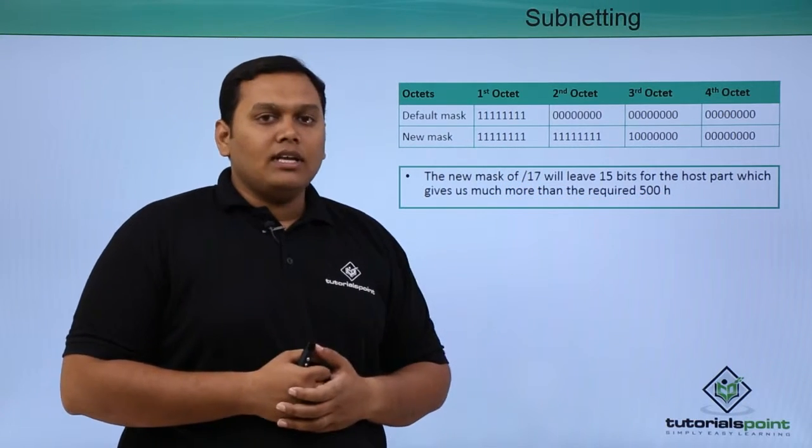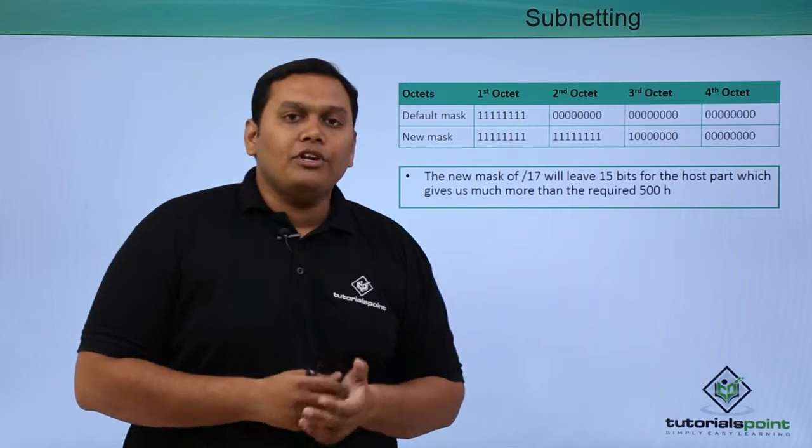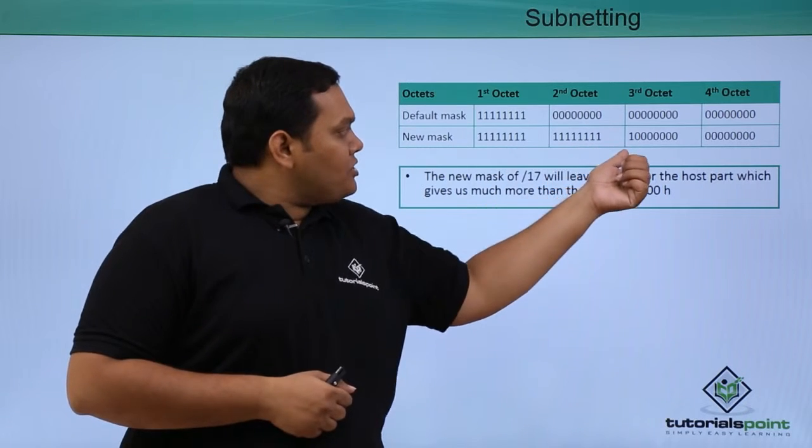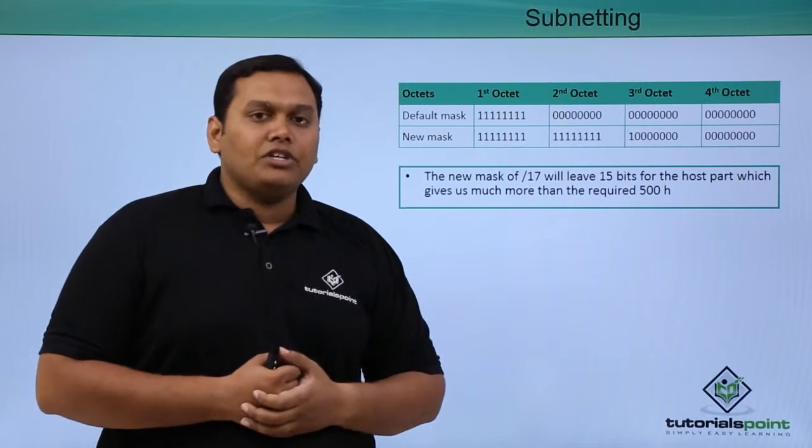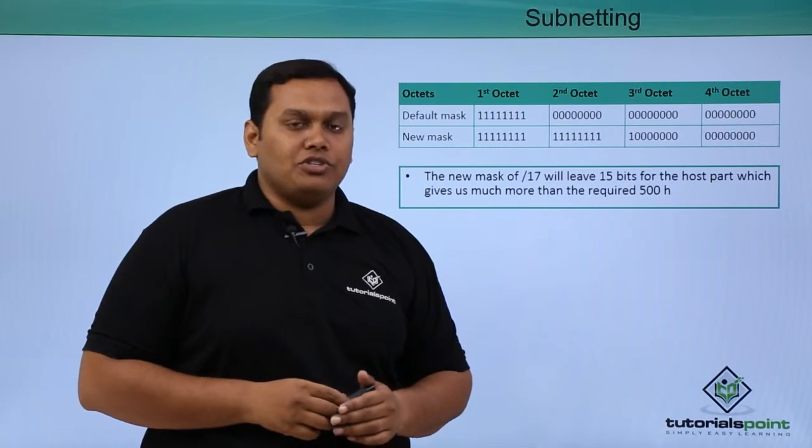8 plus 9 gives you 17 notation, and we leave 15 bits for the host part, which is much more than the required 500. We need only 500 hosts, so we borrowed 9 bits and the notation is /17.